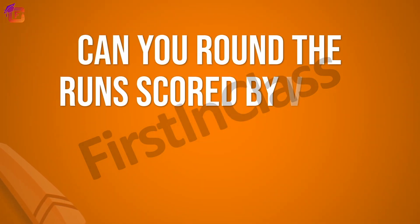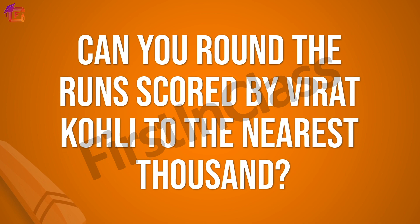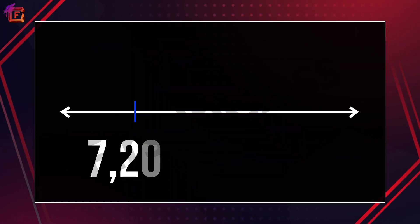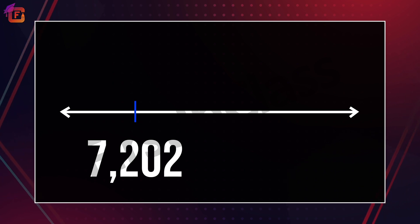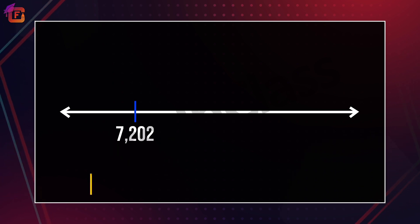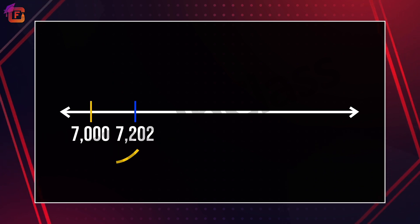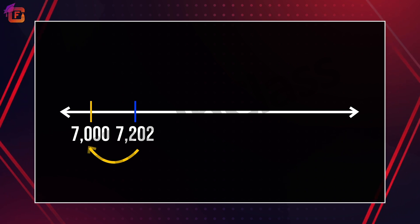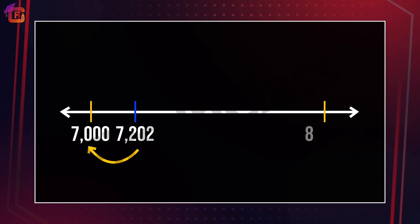Can you round the runs scored by Virat Kohli to the nearest thousand? Yes, you're correct — seven thousand two hundred two, to the nearest thousand, is seven thousand, as seven thousand two hundred two is nearer to seven thousand than eight thousand.